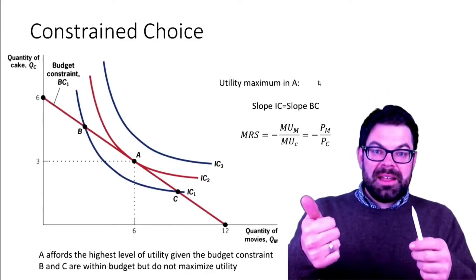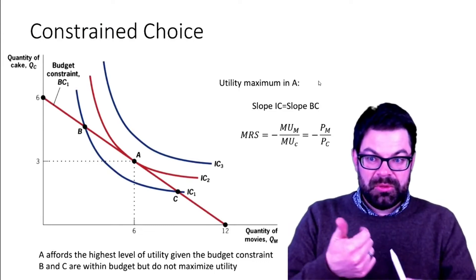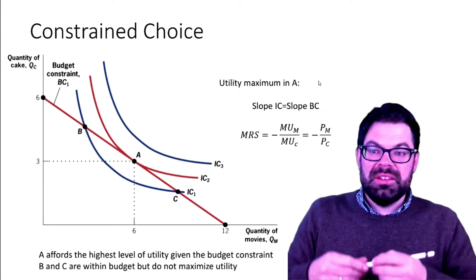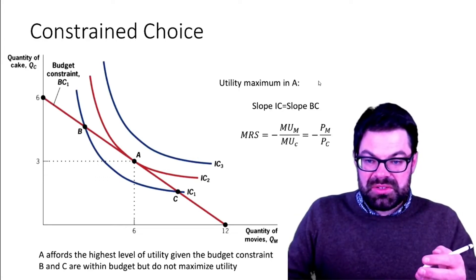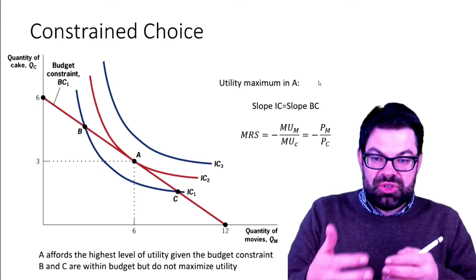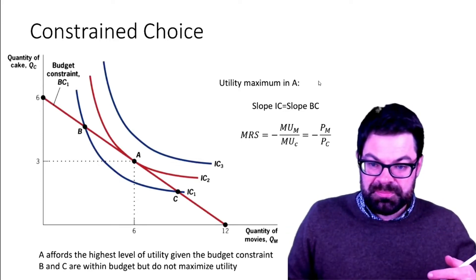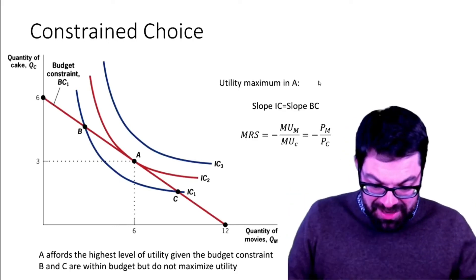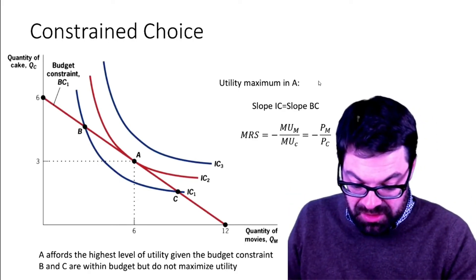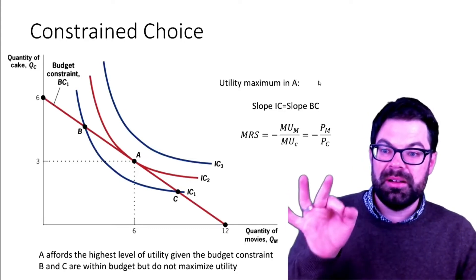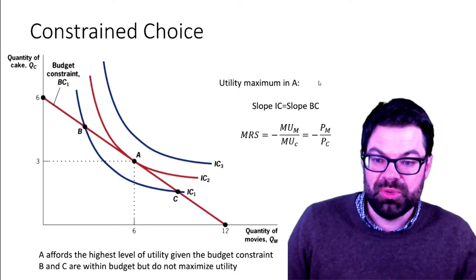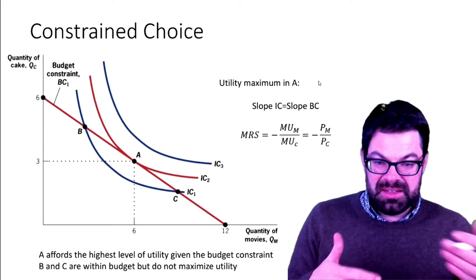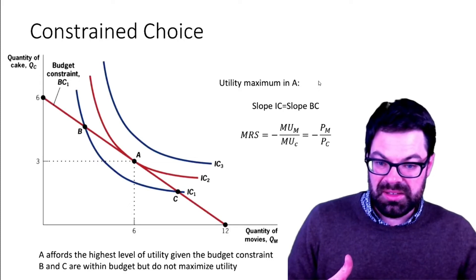We have had the indifference curves, we have had the budget constraint. Now let's bring the two together and think under what conditions a consumer chooses a given bundle of goods and what mathematical condition has to be met for the consumer to make the optimal choice.